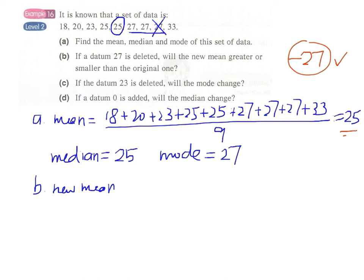Since this number is greater than the original mean—that is, a number larger than the mean is removed—the overall effect on the set of data is that the new mean will be decreased.